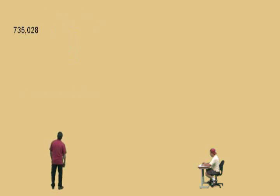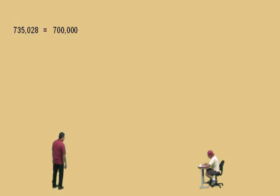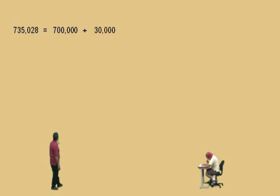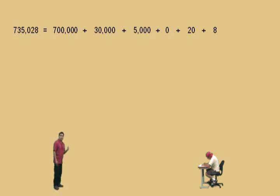There's that number, Charlie. Let's write it in expanded form. The seven is in the what place value? Hundred-thousands. That's right. So we have seven hundred-thousand, the three is in the ten-thousands giving us thirty-thousand, five is in the one-thousands giving us five-thousand, and we have zero one-hundreds — we've got to put the zero there as a placeholder. Two tens gives us twenty, and the eight ones gives us eight. There's our expanded form.